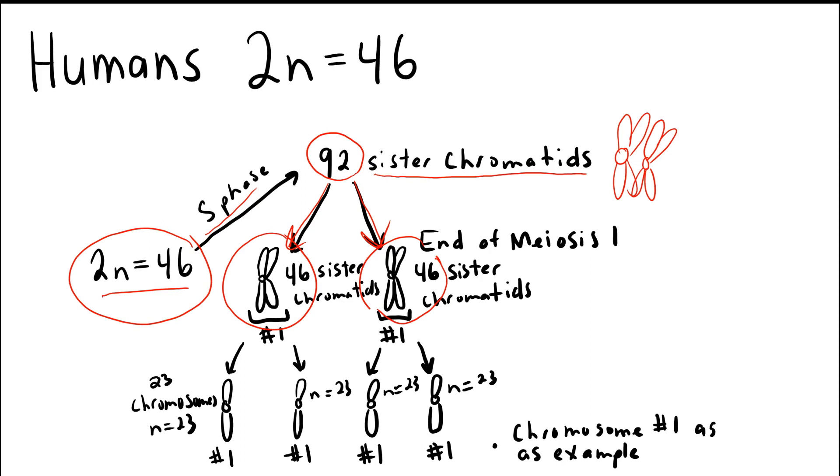After the second round of meiosis, the sister chromatids are separated and are once again becoming individual chromosomes. So here we'd see after meiosis II, we would have individual gametes with an N value of N equals 23. Again, because we've separated those 46 chromatids into 23 chromosomes in each daughter cell.